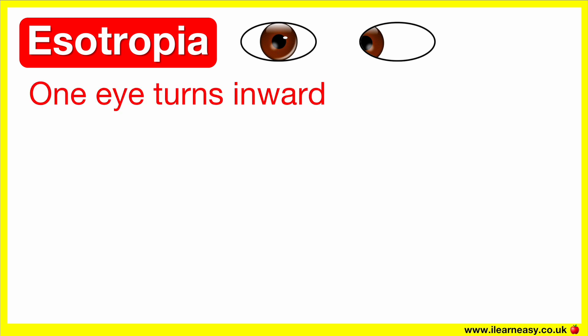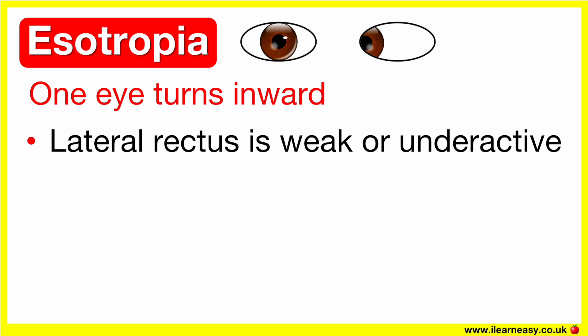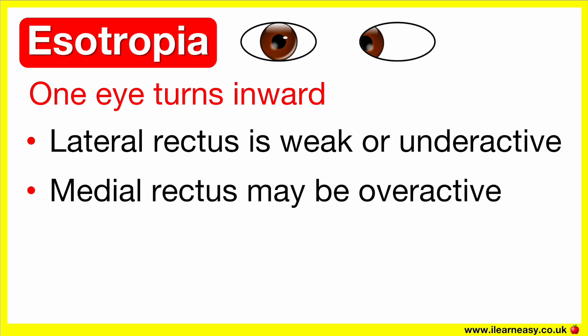Esotropia is when one eye turns inward, towards the nose. It can occur in children or adults, and it often causes eye strain, headaches, or amblyopia if left untreated. An esotropia can occur when the lateral rectus, which pulls the eye outwards, is weak or underactive. Or it can be when the medial rectus, which pulls the eye inwards, is overactive. As a result, the eye drifts inwards due to the unbalanced inward pull.